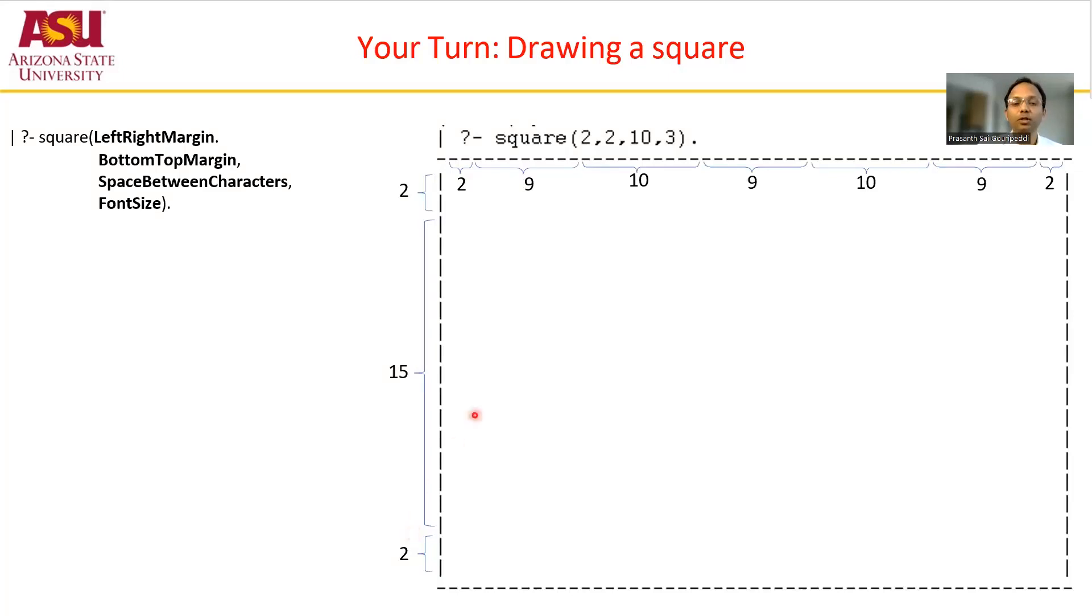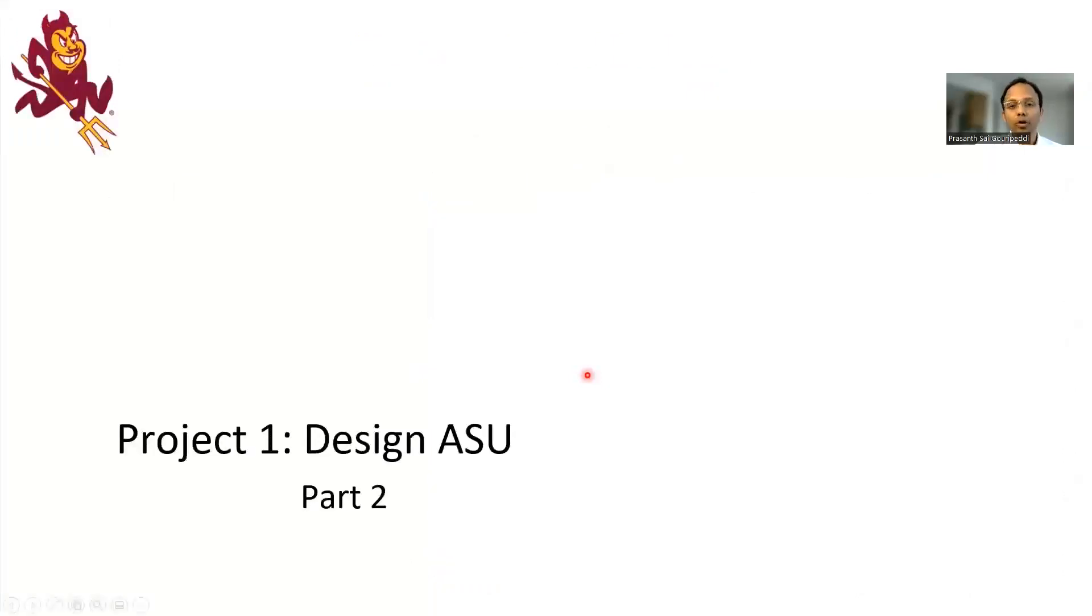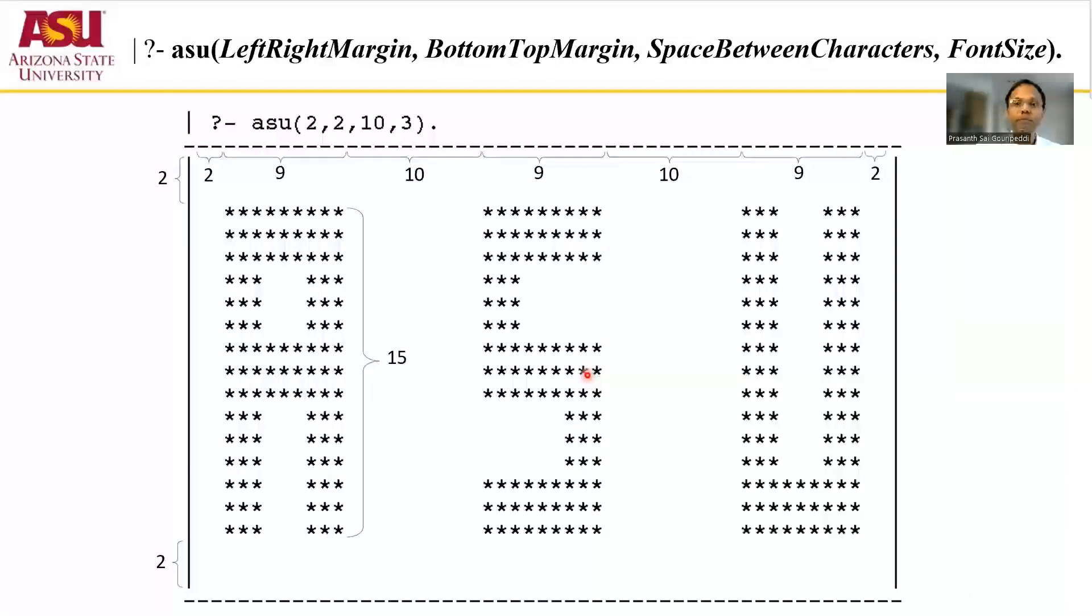In part two of this project we will be replacing the center portion of this box with the characters ASU. So we'll be looking at how to draw these characters ASU. Now A is made up of font size times 3 by font size times 15. For writing one character A, similarly for S and U. So we will discuss how we can create the character A, and I will leave it to you for your better judgment to understand how to do S and U, which is very similar to doing A.